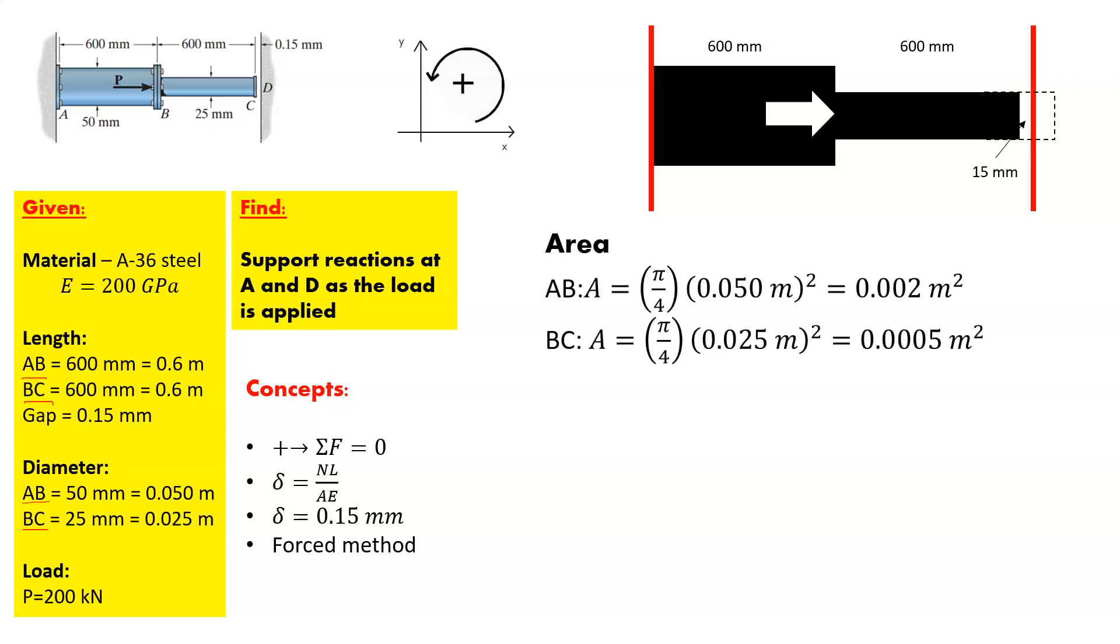So the area of AB, pi over 4 times the diameter squared is 0.002 meters squared for AB and it's 0.0005 meters squared for segment BC.